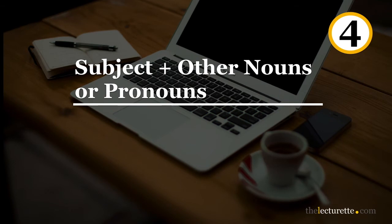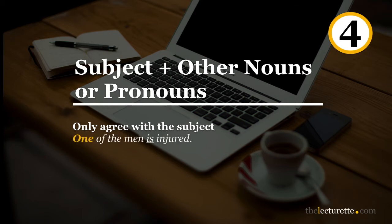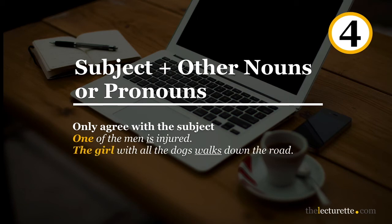Number four is about not being misled by phrases that come between the subject and the verb. You just have to make sure that the verb agrees with the subject, not with the noun or pronoun that might be in the phrase. So: 'One of the men is injured.' Or: 'The girl with all the dogs walks down the road.'